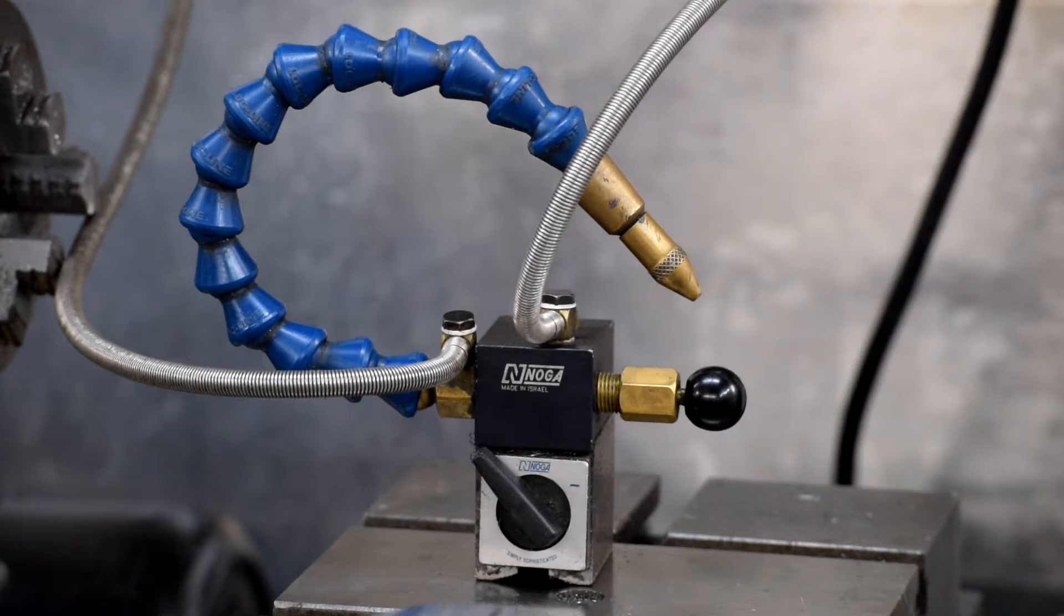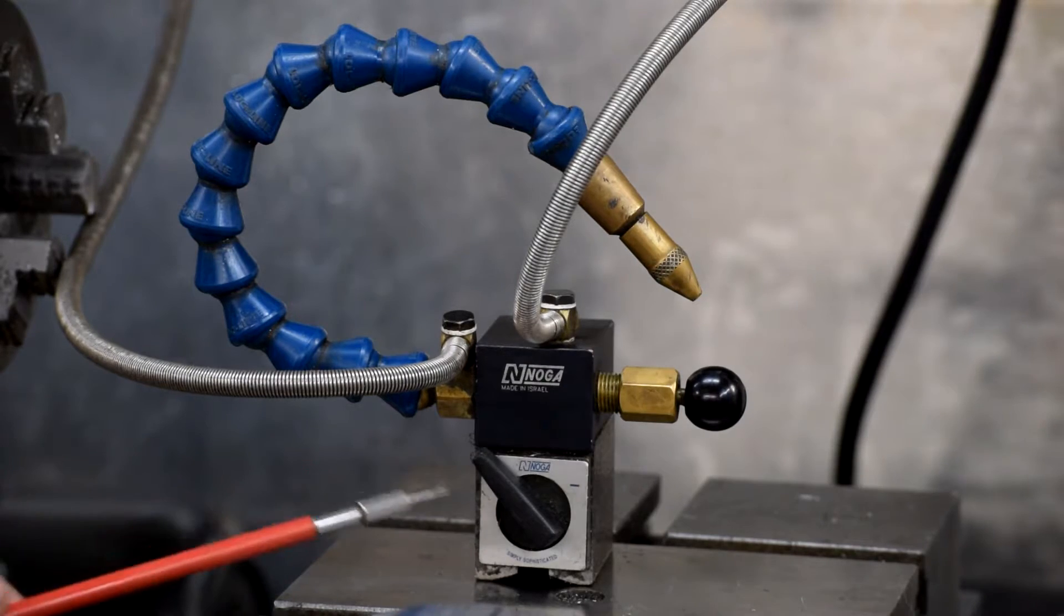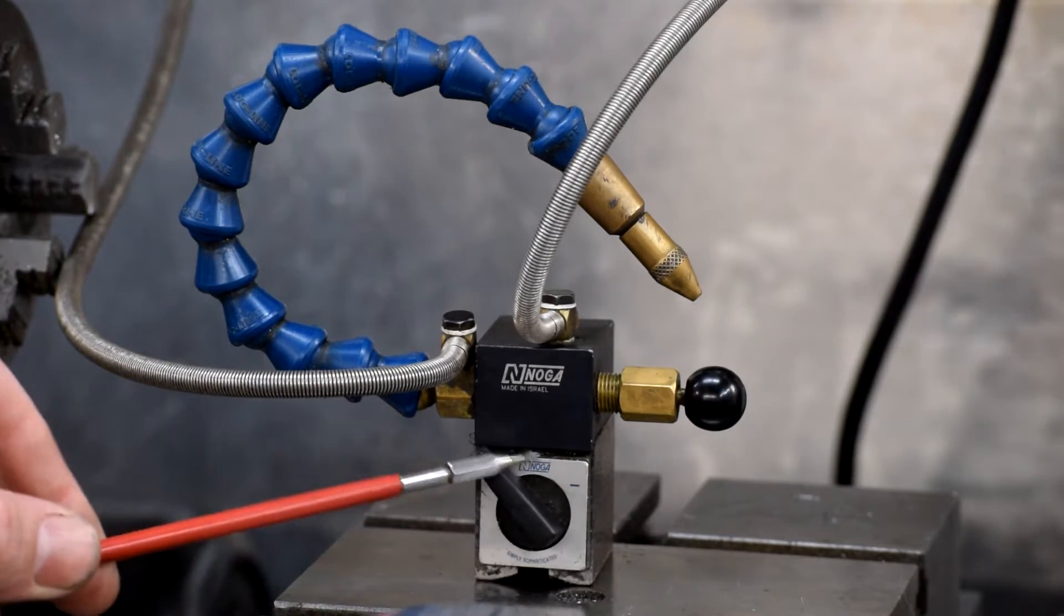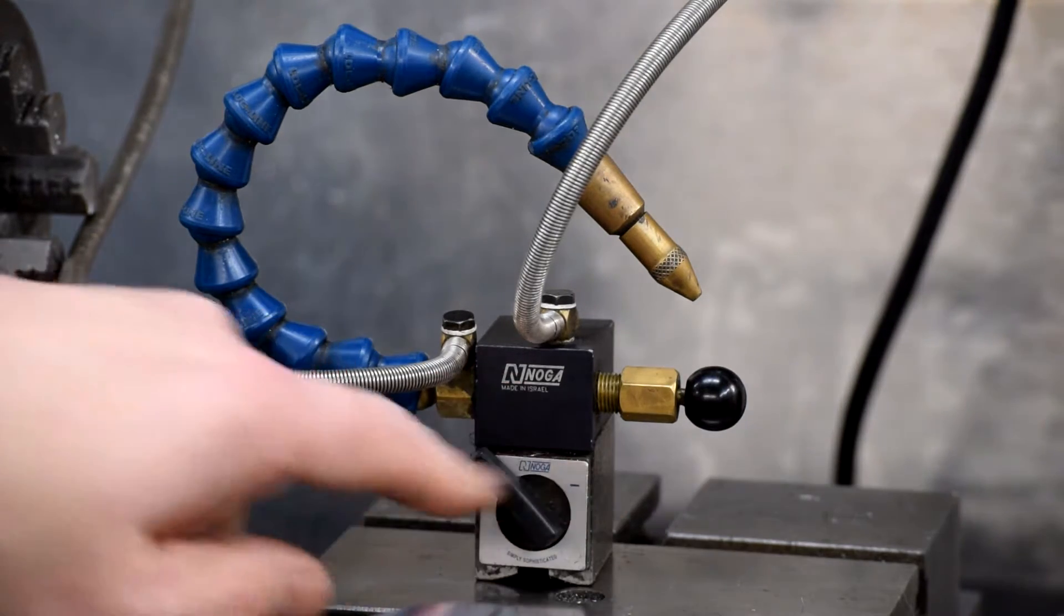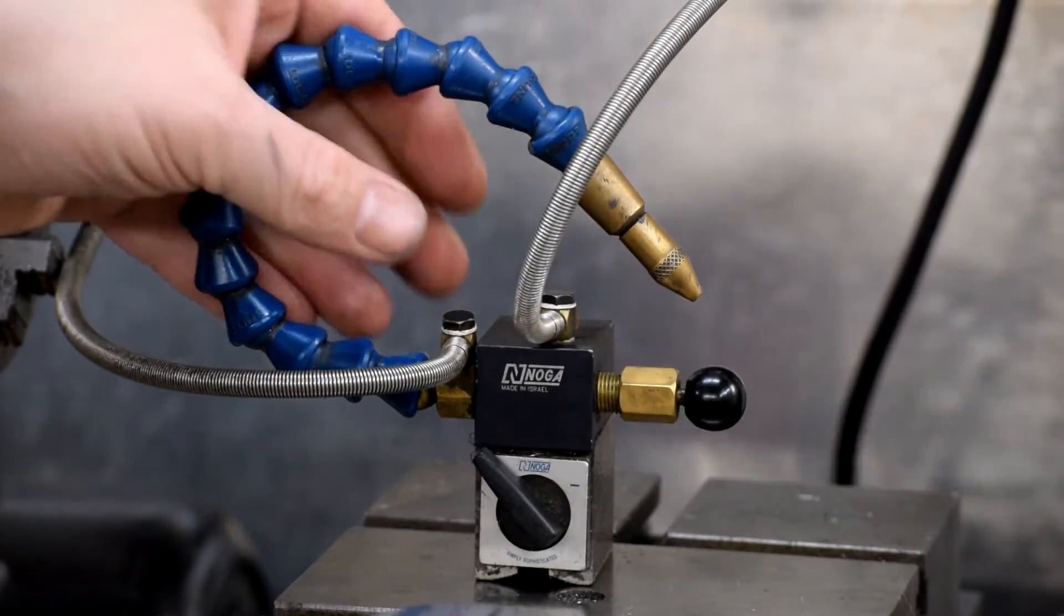So what we have here is a Noga mist cooling system. It's just this thing here. What we've got is a magnetic base, very similar to how a dial indicator works.